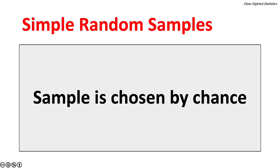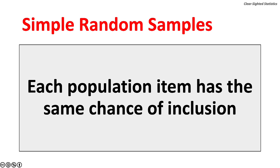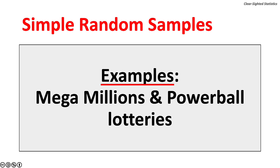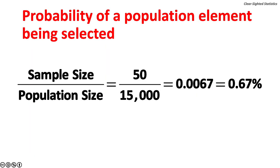With simple random samples, the sample is chosen by chance. Each element of the population has the same chance of being included in the sample, and this probability is known. Examples include the Mega Millions and Powerball lotteries. The probability of a population element being selected is found by dividing the sample size by the population size. If 50 items are selected from a population of 15,000, each element has a 0.67% chance of being selected.